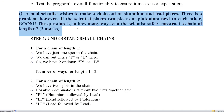A scientist wishes to make a chain out of plutonium and lead pieces. But there is a problem — if the scientist places two pieces of plutonium next to each other, boom — that is an explosion. The question is: how many ways can the scientist safely construct a chain of length n?